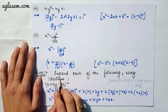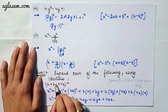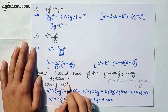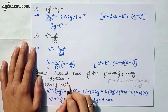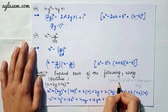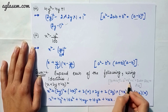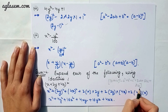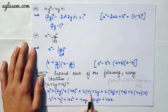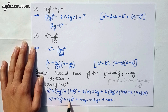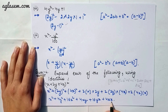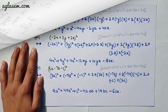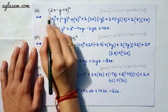Moving to our fourth question: expand each of the following using identities. Part 1 says (x + 2y + 4z)². Applying the identity (a + b + c)² = a² + b² + c² + 2ab + 2bc + 2ca, we get x² + 4y² + 16z² + 4xy + 16yz + 4zx.